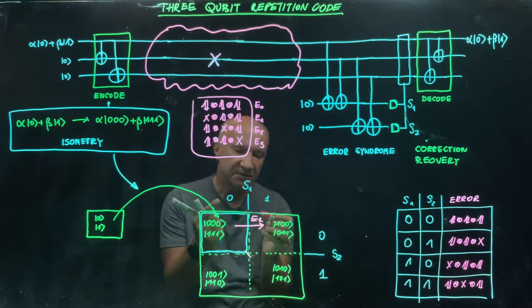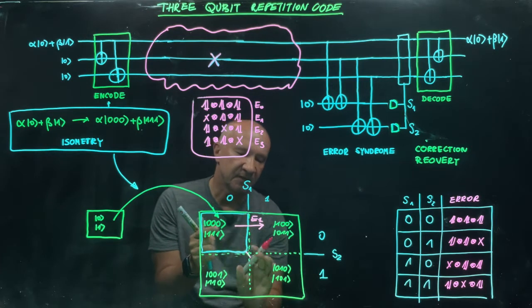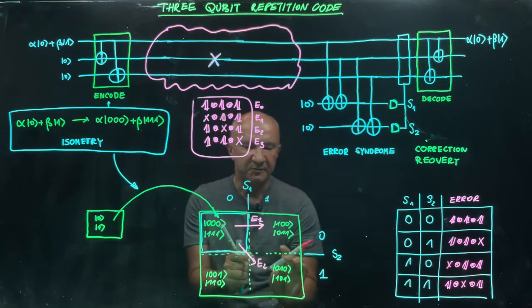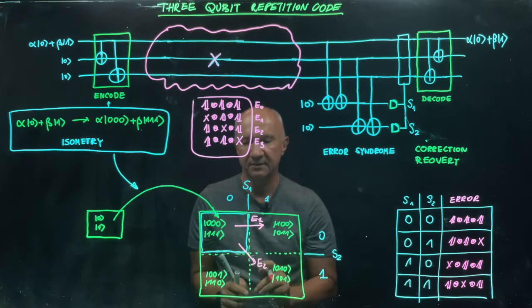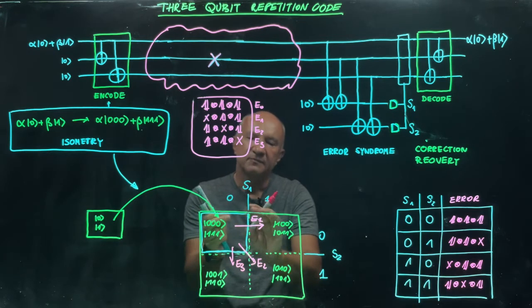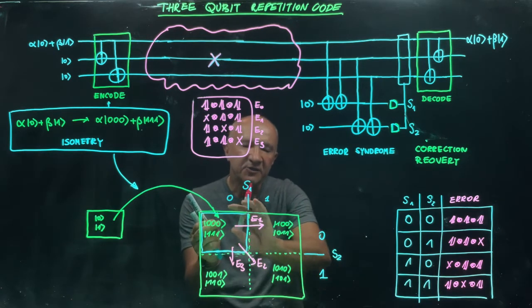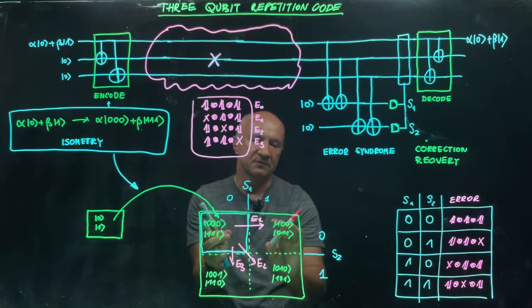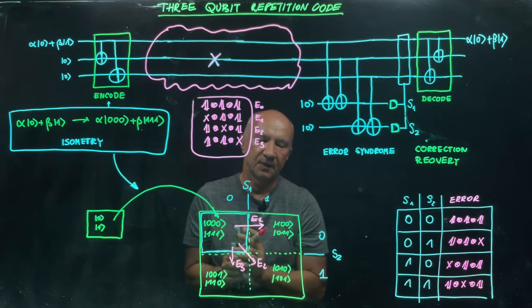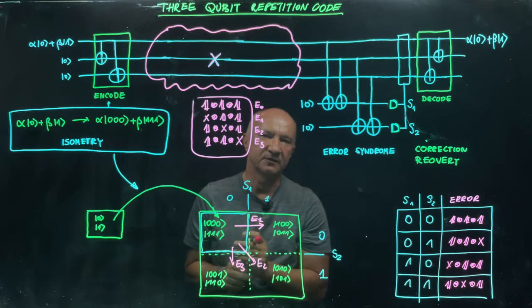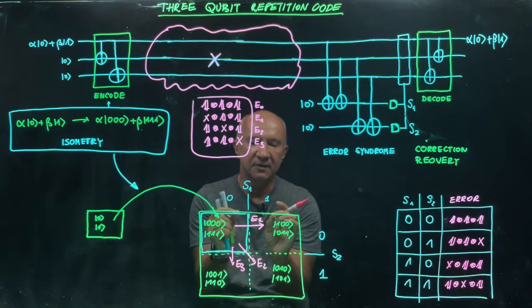E2 does a similar job: it takes the whole code subspace and shifts it into an orthogonal subspace spanned by vectors |0,1,0> and |1,0,1>. E3 does likewise. So we have three non-trivial errors, and each of them takes the original code space into an error subspace. All four subspaces — the code space and the three error subspaces — are mutually orthogonal. In principle, you can distinguish where your state is by performing a measurement that differentiates between those orthogonal subspaces, allowing you to figure out which error happened.